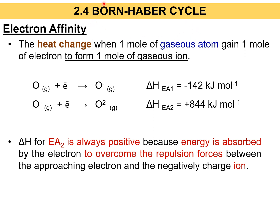Before we go into the Born-Haber Cycle, you need to know about electron affinity first, because electron affinity will be included in the Born-Haber Cycle. By definition, electron affinity is the heat change when 1 mol of gaseous atoms — for example, oxygen — in the gas phase gains 1 mol of electrons to form 1 mol of gaseous ions. That is the first electron affinity.